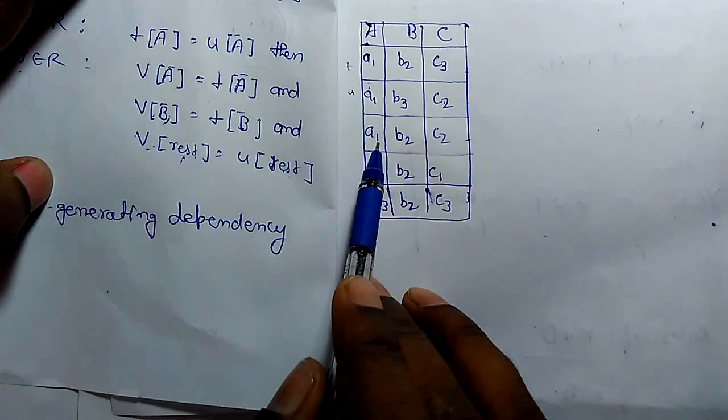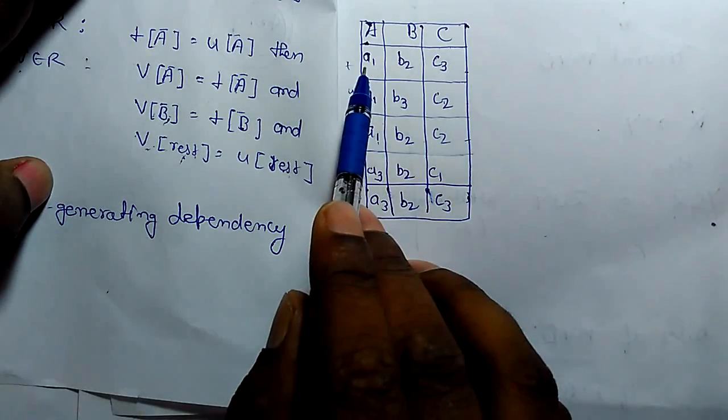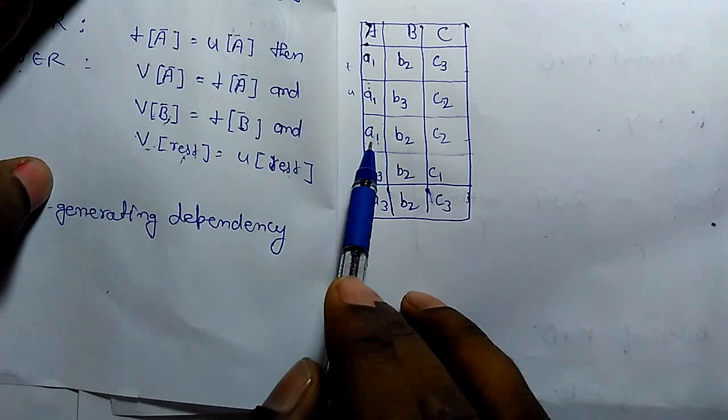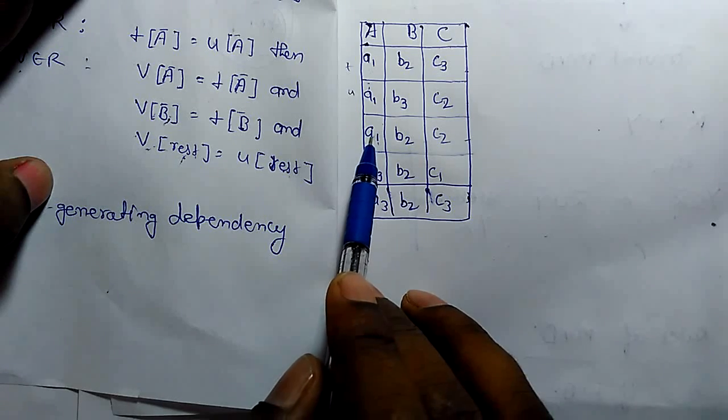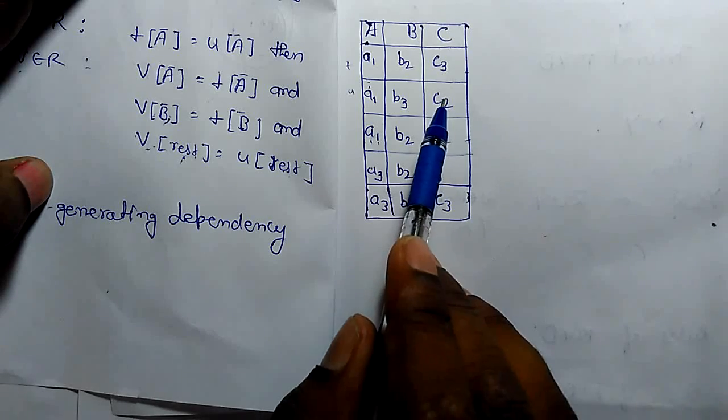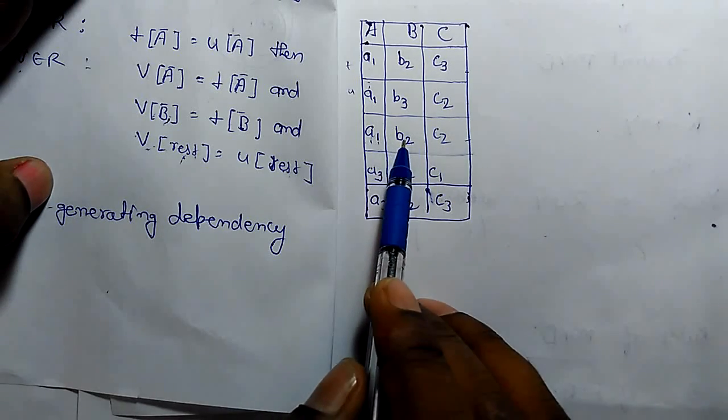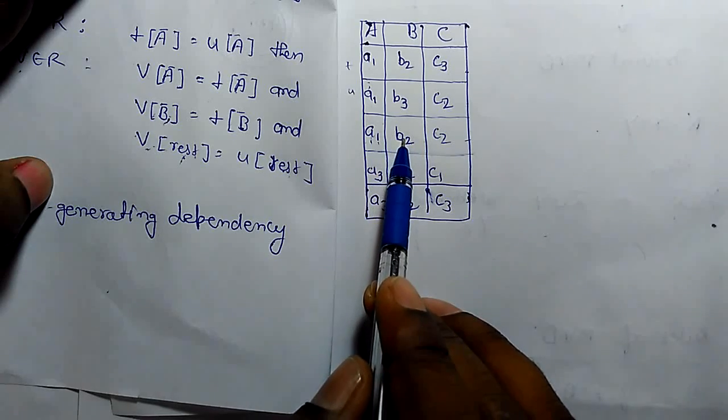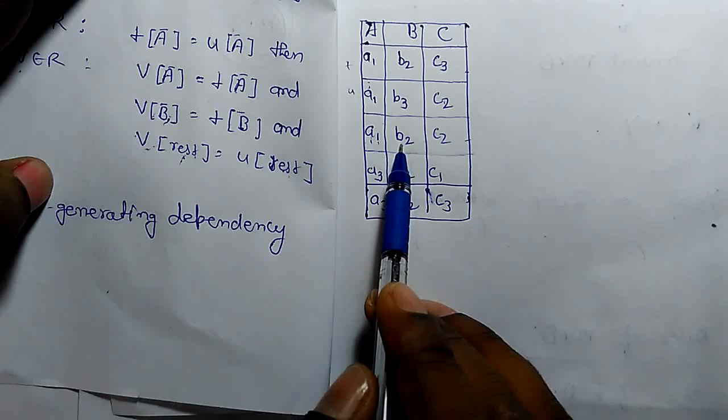Then there is V that holds value of A. It's correct. And B holds the value of U. It is also correct. But the rest of attribute should be equal to U, which is not here.